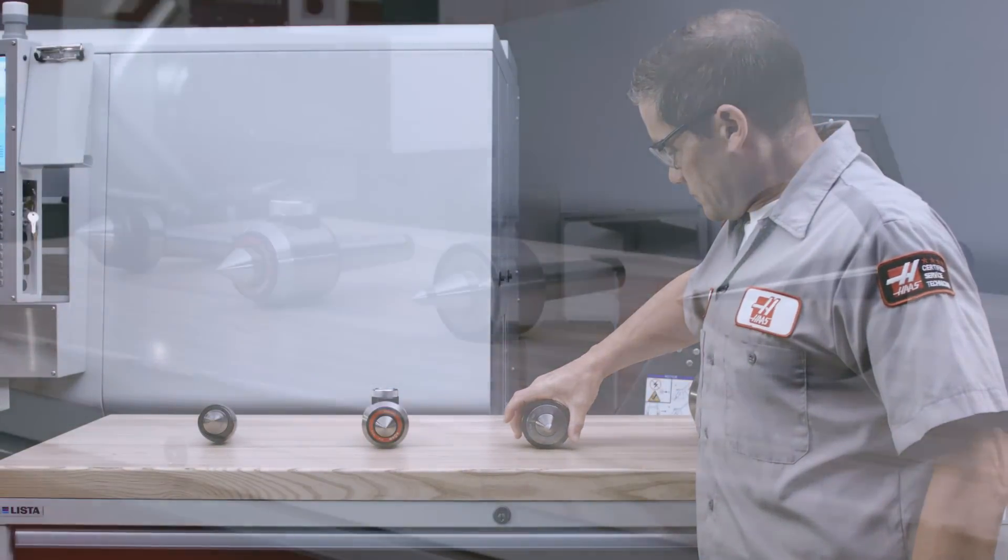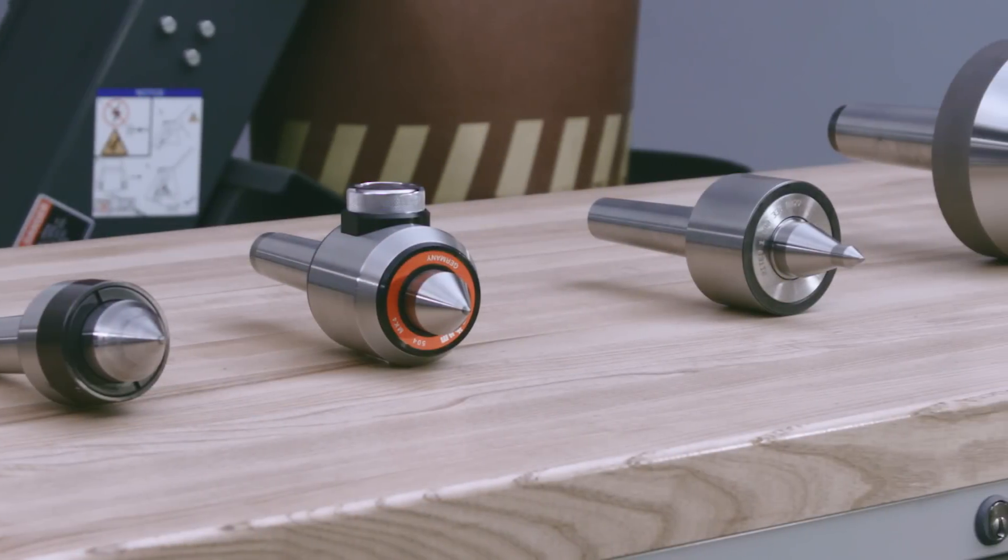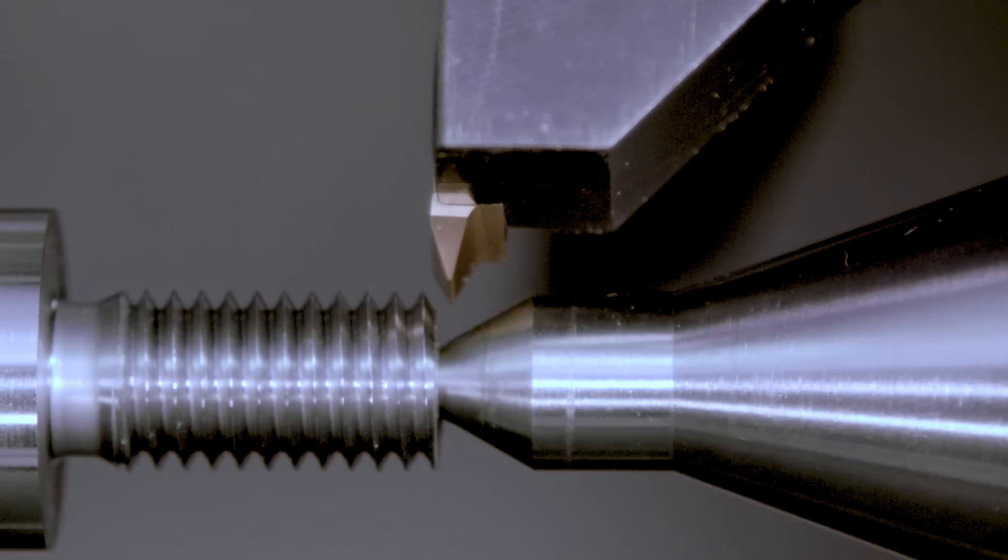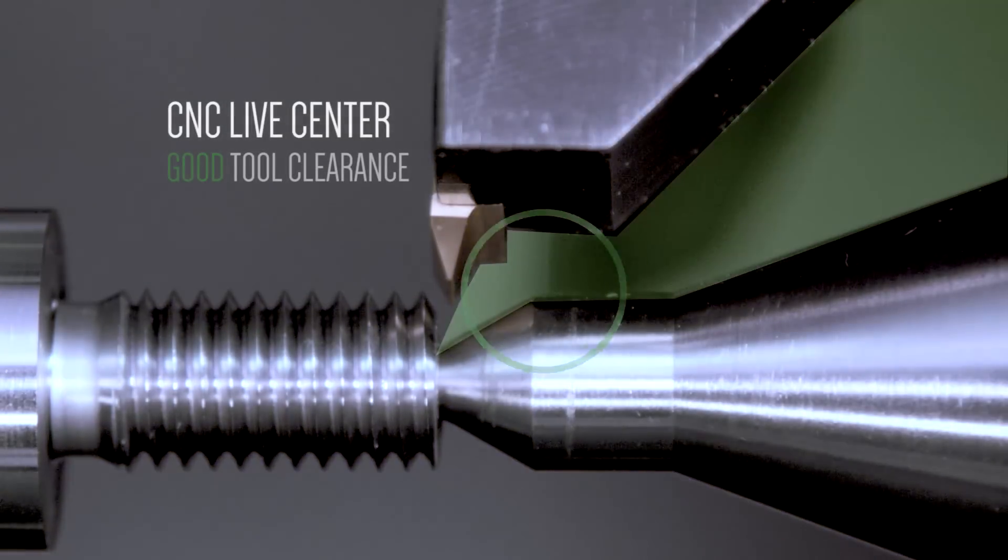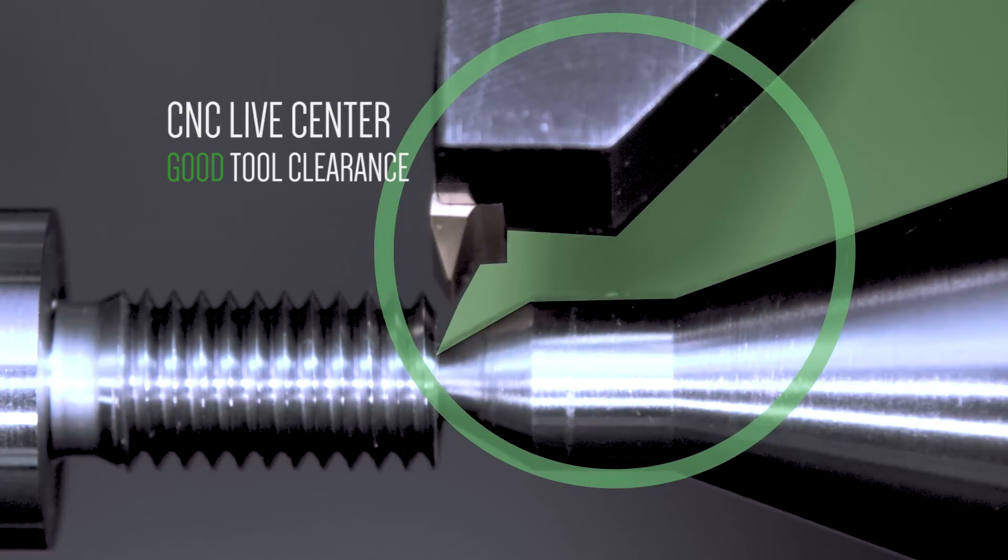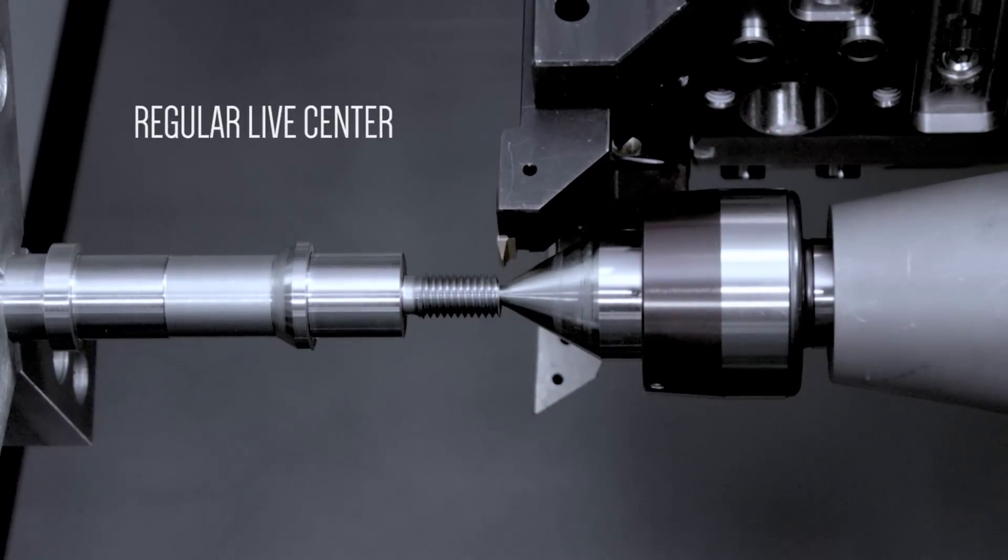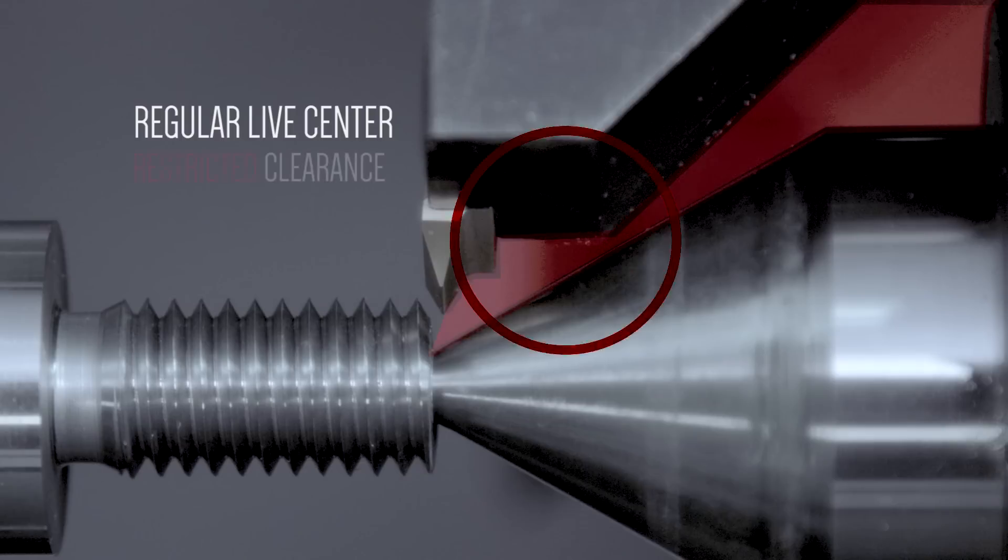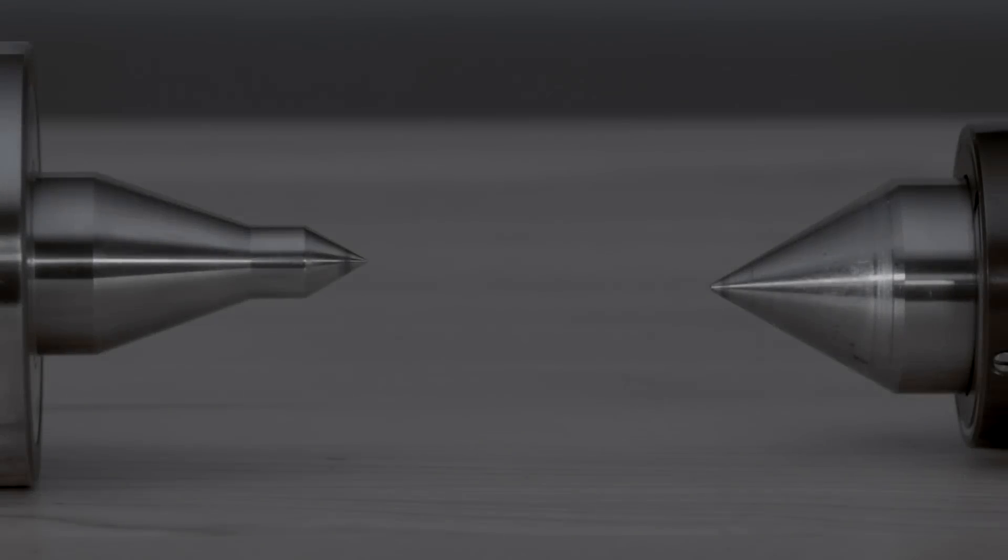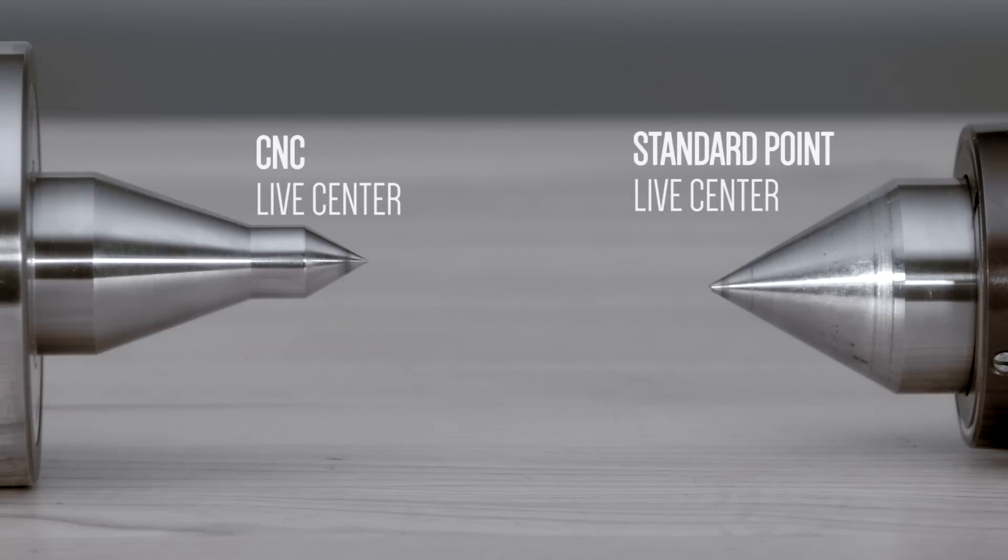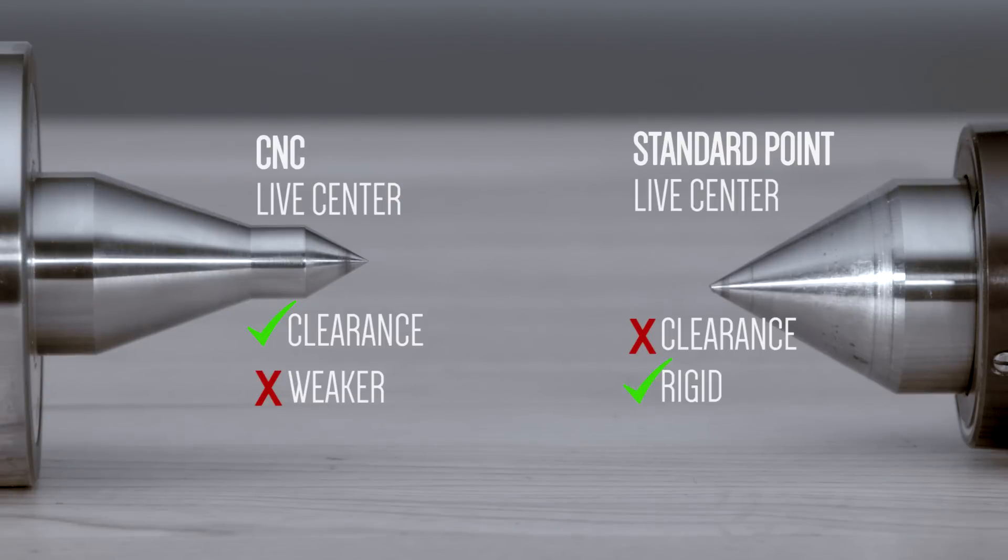Live centers come in many sizes and shapes to fit your tailstock while allowing the best access and support for your parts. In our example, because our part reduces to a relatively small threaded diameter at the tailstock side, we're using what's often called a CNC live center. The reduced diameter shank on this live center allows more room near the end of the part for threading and other finishing tools. If we were using a standard point live center, we'd have to be very careful not to make some contact here. Let's look at the CNC and standard point center side by side. We've already mentioned that the CNC center gives you more clearance, but it is weaker so it may introduce some chatter. By comparison, the standard point center is more rigid, so you might opt to use it to cure chatter problems.